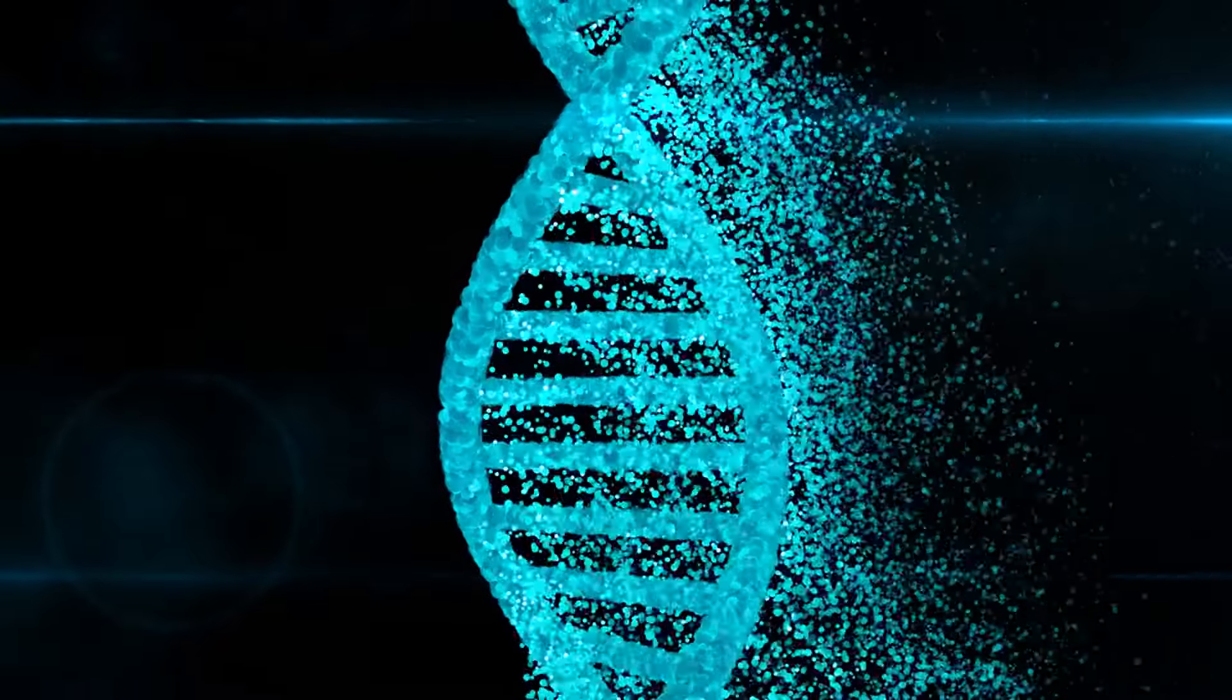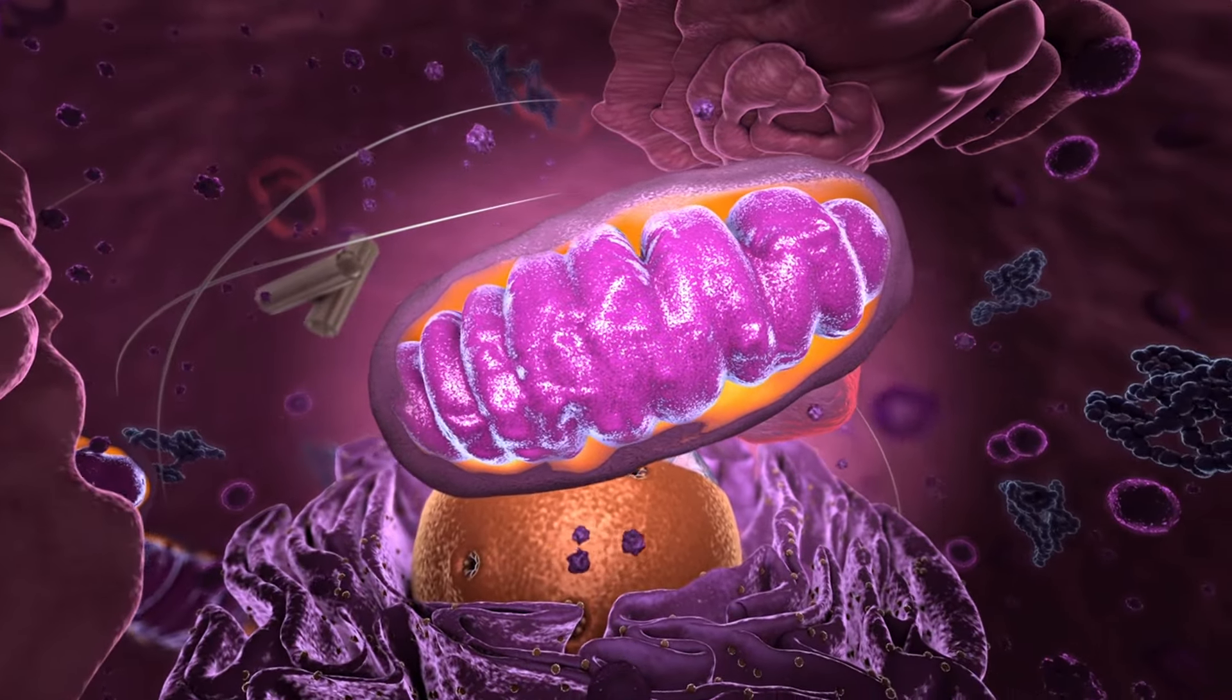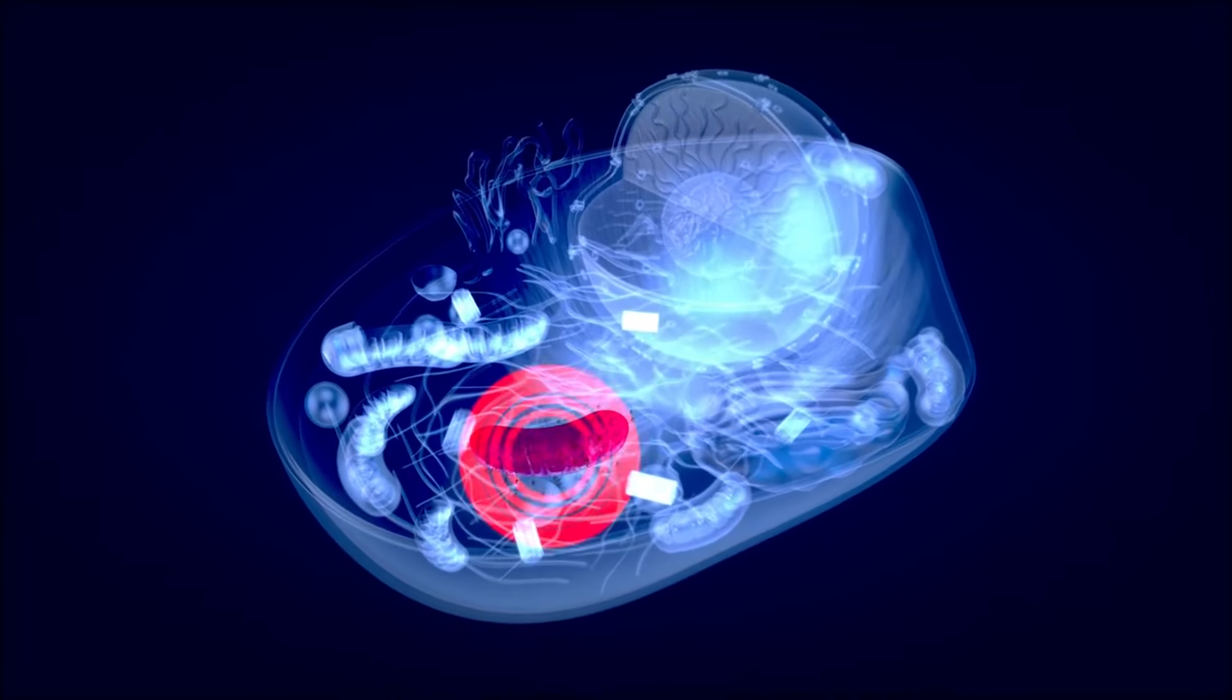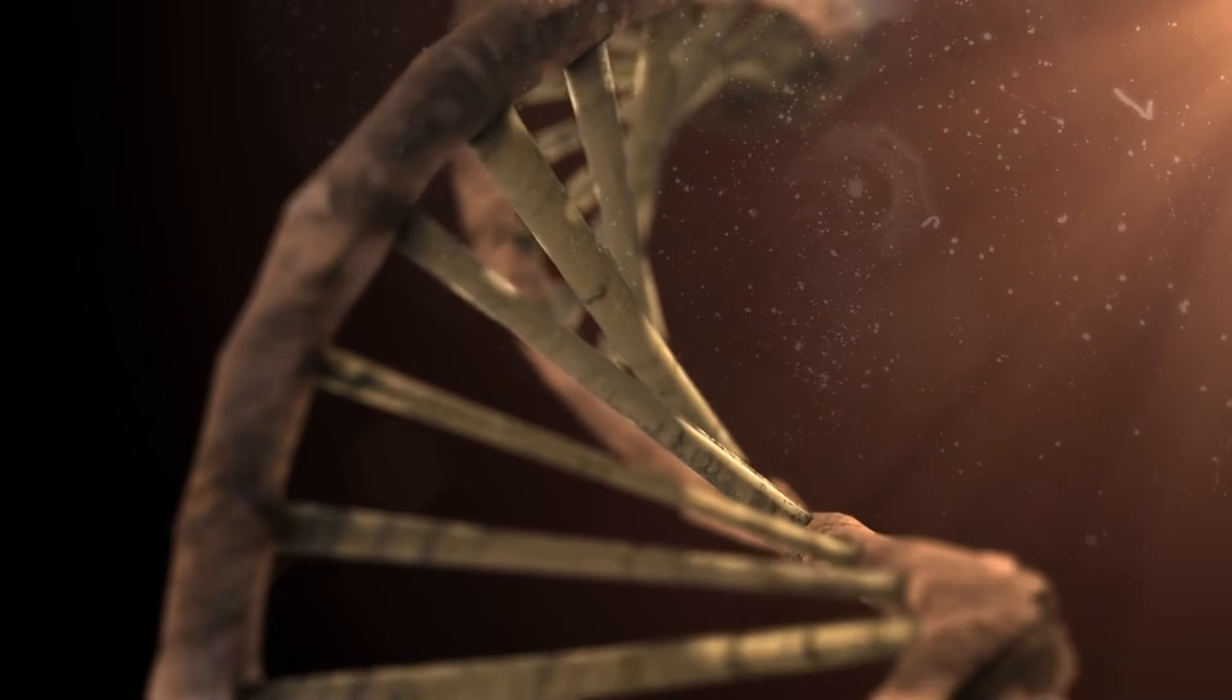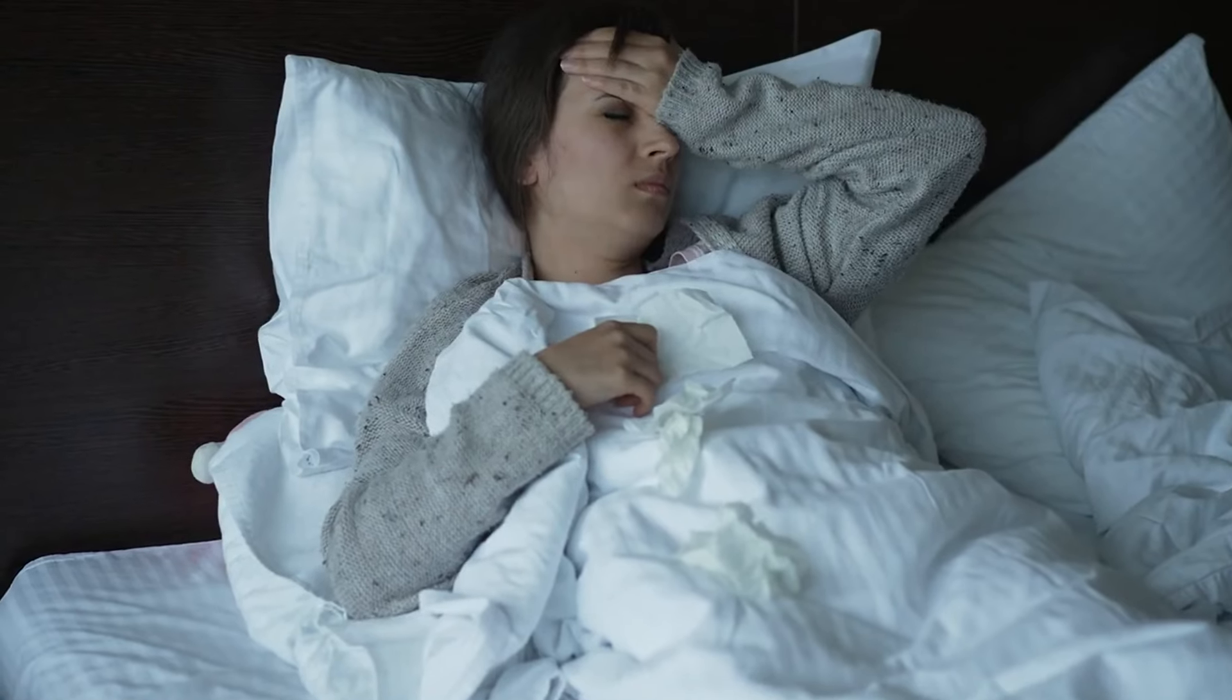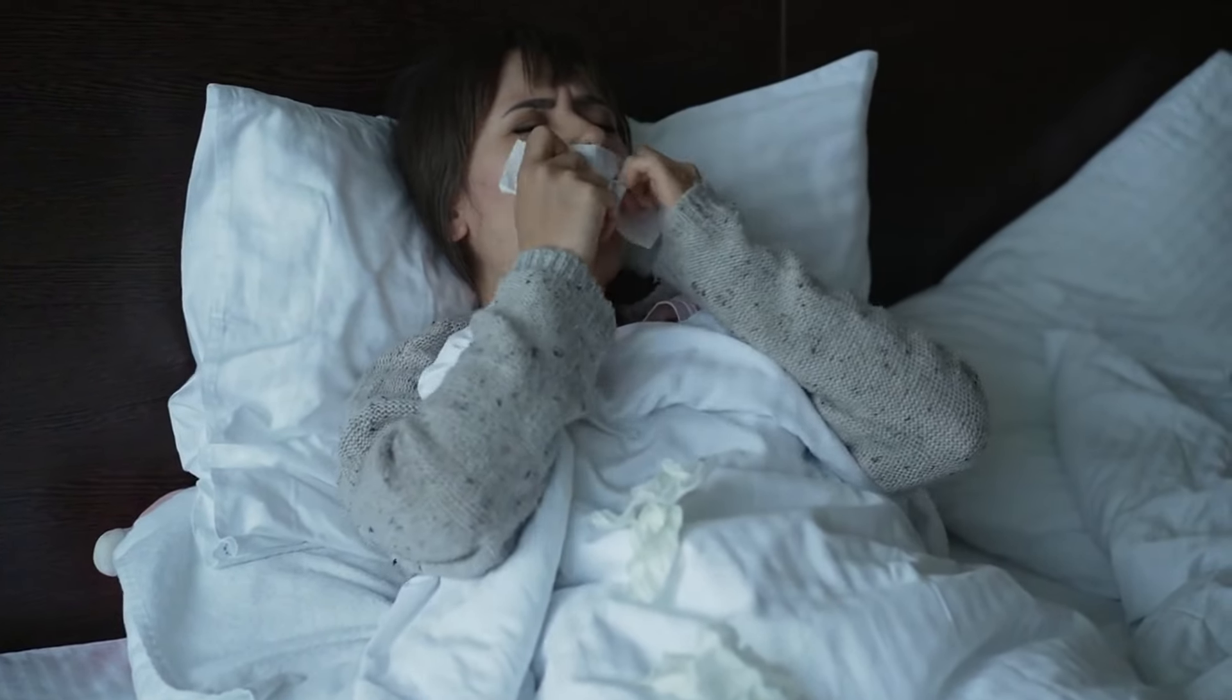But what happens when these powerhouses start to fail? This is known as mitochondrial dysfunction. When mitochondria don't work as they should, the cells can't produce enough energy. This can be due to genetic mutations, environmental stress, chronic inflammation, or other factors that damage the mitochondria. When our cells don't get the energy they need, it can lead to various health problems including cancer.